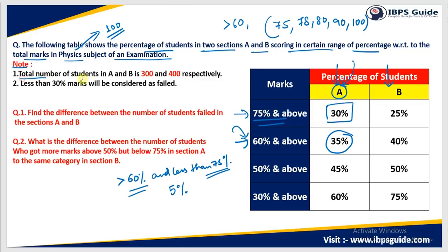The note states that the total number of students in sections A and B is 300 and 400 respectively. So in section A, we have a total of 300 students, and in section B, we have 400 students. So if I find 30% of 300, which equals 90, then I can say that in section A, 90 students have scored 75% or more marks. Likewise, if I ask what is the total number of students who scored 50% and above, that will be 45% of 300. You can easily find the corresponding values for section B as well.